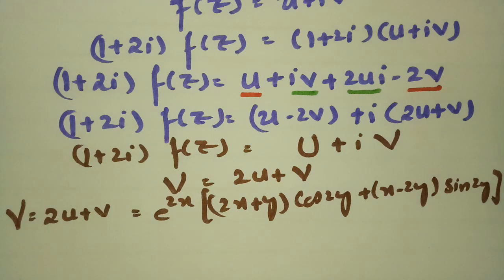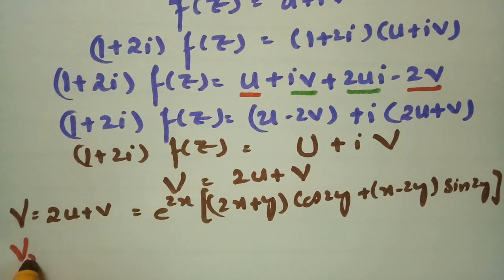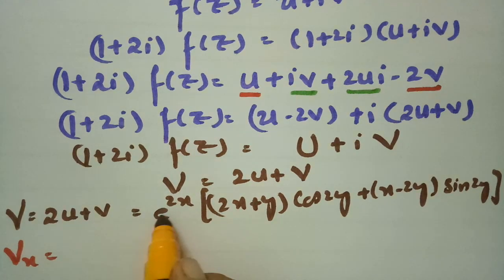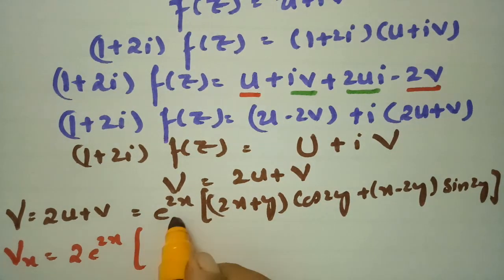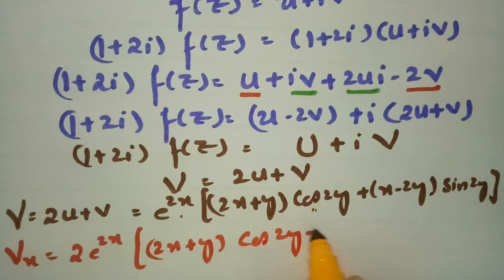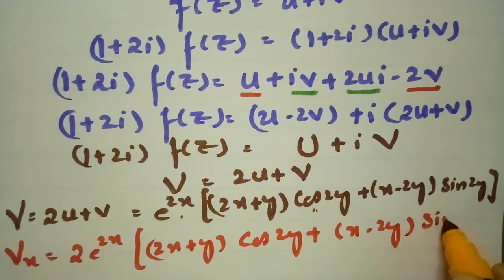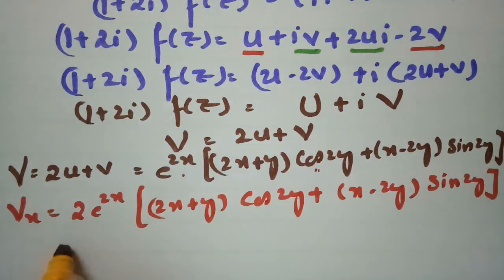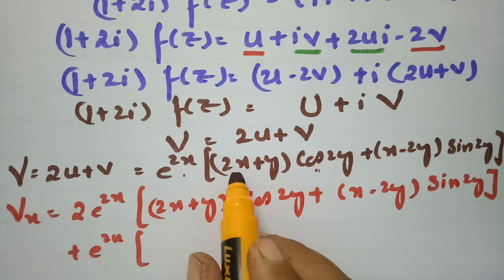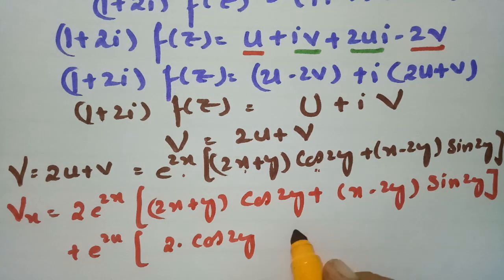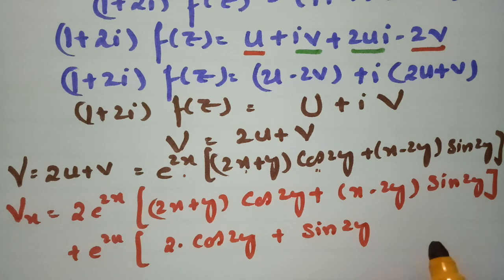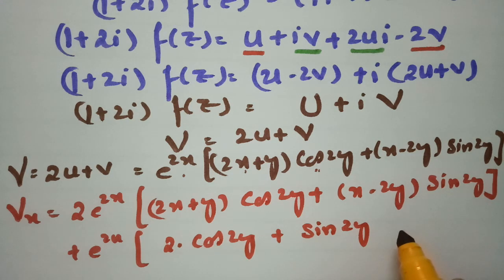If I differentiate with respect to x, V_x will be: 2·e^(2x)·[(2x + y)cos(2y) + (x - 2y)sin(2y)] + e^(2x)·[2cos(2y) + sin(2y)]. Here I apply the product rule, leaving the second function as is and differentiating the first, then leaving the first and differentiating the second.